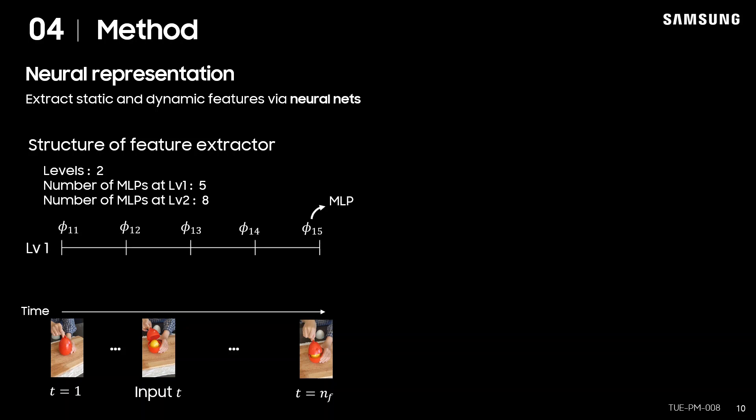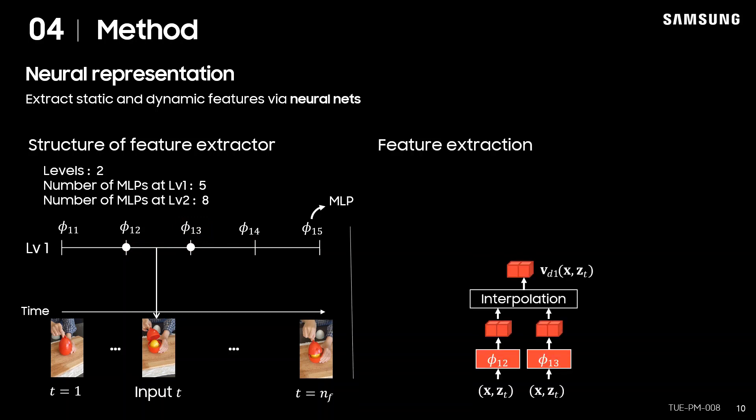For the first level, the whole time frame is divided into four slots and each MLP is placed to be responsible for two adjacent time slots. The input frame T is placed between the two MLPs, phi_i2 and phi_i3. In this case, the input position X and time T are fed to the two MLPs. Then, the output feature vectors are linearly interpolated weighted by distance between T and the location of each MLP to have interpolated feature vector.